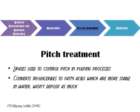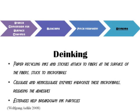The next stage in paper processing is pitch treatment. Lipase is the enzyme used in this stage. Lipase is used to control pitch in pulping processes and to convert triglycerides to fatty acids, which are more stable in water so they won't be deposited. Lastly, in the de-inking stage, paper recycling inks and stickies attach to fibers; cellulase and hemicellulase enzymes hydrolyze these microfibrils, releasing the adhesives. Esterases also help break down ink particles.